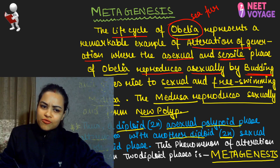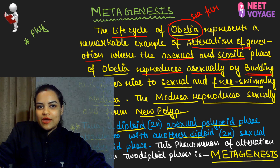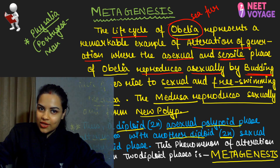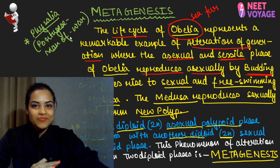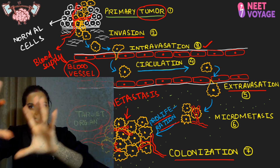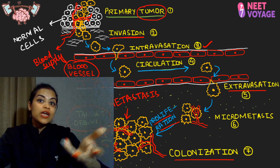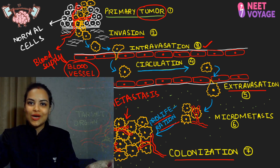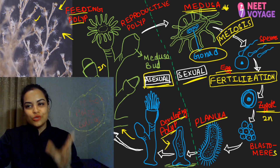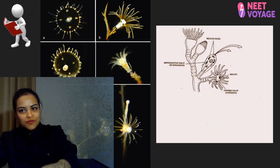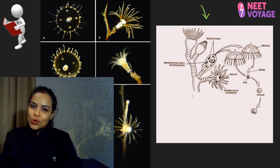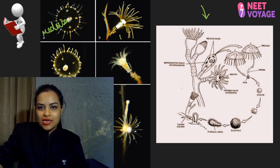Metagenesis is seen not only in obelia but also in Physalia, which is the Portuguese man-of-war — also a member of Nidaria. Both of these show metagenesis. So here we have metagenesis and here we have metastasis. Many students have asked me this question, so I thought I'd make a separate video for it. You can watch this video anytime to understand, without needing to search through books. Here on screen you can see the medusa stage and polyp form of obelia showing metagenesis.